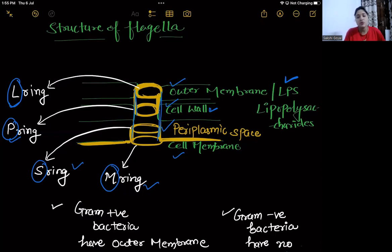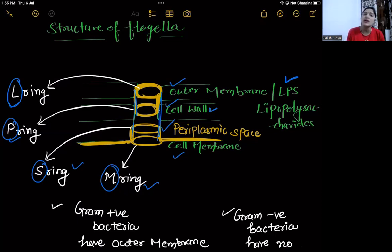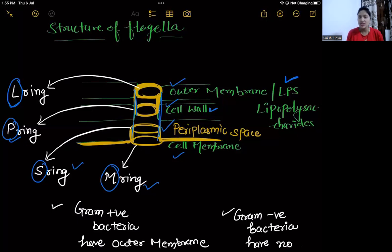In gram-negative bacteria, there is an LPS outer membrane, so there are four rings — L, P, S, and M — both outer and inner ring pairs are present. In gram-positive bacteria, because there is no outer membrane, the L ring and P ring (the outer ring pair) are absent. Since L and P are associated with the outer membrane, when the outer membrane is gone, those rings go with it.